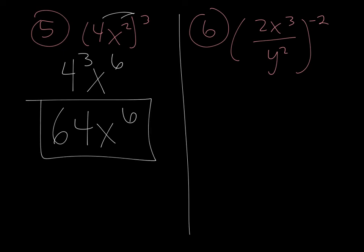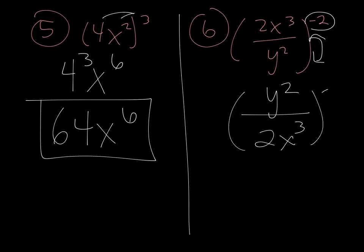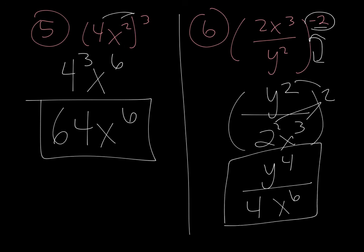Number 6: you have the quantity 2x to the third y squared, all of that to the negative 2. Since the whole expression is raised to a negative exponent, I'm going to flip this fraction upside down, giving y squared over 2x to the third, and now it can be to the positive 2. By flipping it, it gets rid of the negative. Now distribute the positive 2 to every single thing in the parenthesis: y squared to the second power becomes y to the fourth; on the bottom you have 2 squared, which is 4; and x to the 3 times 2 gives x to the sixth. So the answer is y to the fourth over 4x to the sixth.